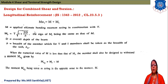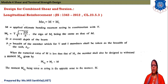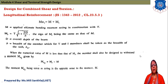M is the ultimate moment acting in combination with torsion. MT = T × √(1 + (2D/B)²), and the sign of MT is the same as M. D is the overall depth of the beam. B is the width of the member; for T-sections, B is taken as the width of the web (BW). When the numerical value of M is less than MT, the member shall also be designed to withstand ME2 = MT − M.